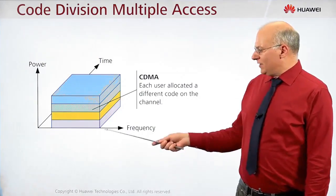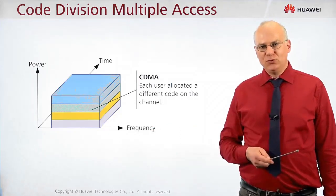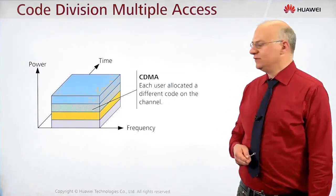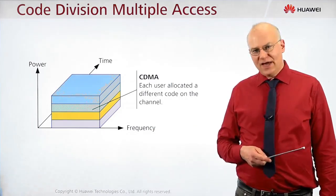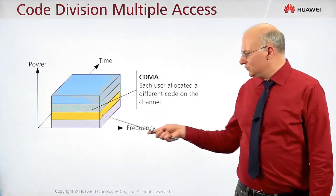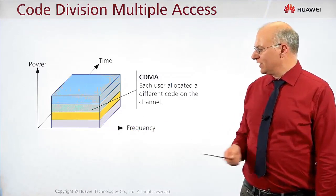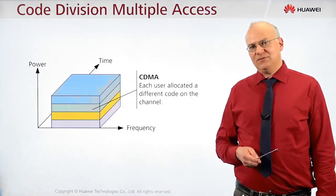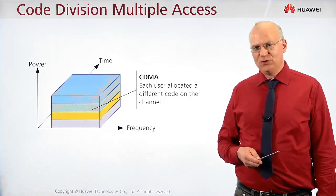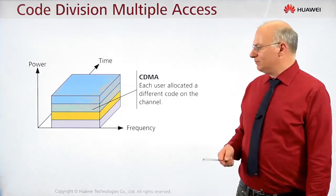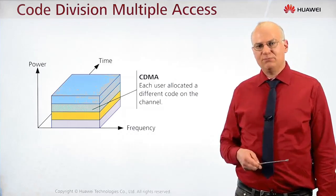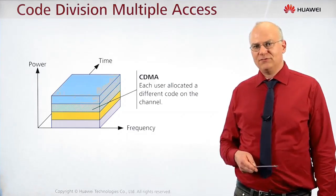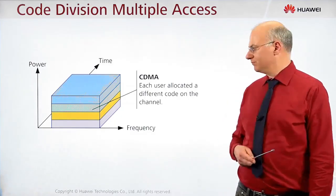There is another dimension used to distinguish users on the interface: the code. In CDMA, several users use the same frequency at the same time, but they are divided using different codes that are orthogonal to each other. By multiplying the received signal by a certain code, the system can extract the signal from just a single user.